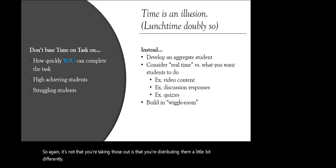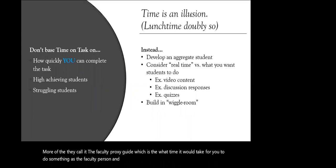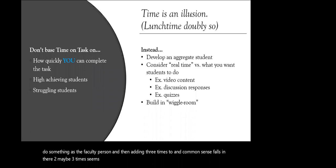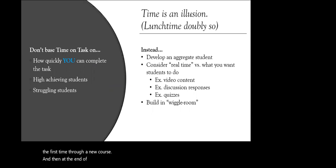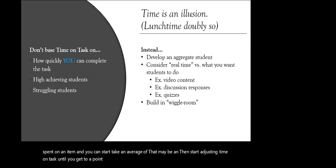A question from Courtney: any advice for building the aggregate student to estimate time on task from their perspective? How do we know how much a B or B+ student takes to do these items? The first time through, you can start with what they call the faculty proxy guide — take the time it would take you as the faculty member to do something, then multiply it by three. Common sense falls in there too; maybe three times seems excessive for certain tasks, but you can err on that side for a new course. At the end of that course, survey students to get their actual time spent on items, take an average, and start adjusting time on task until students are estimating times close to what you're estimating. That's where fine-tuning comes in.